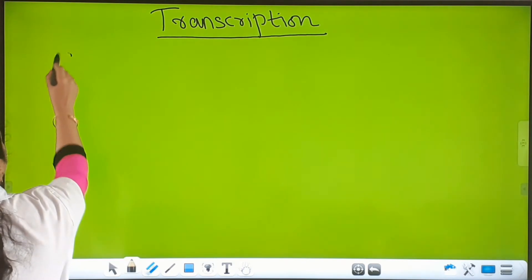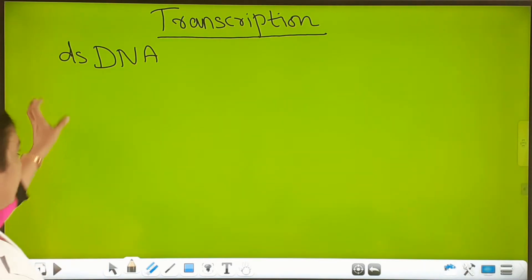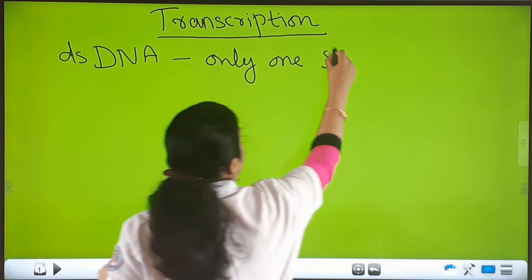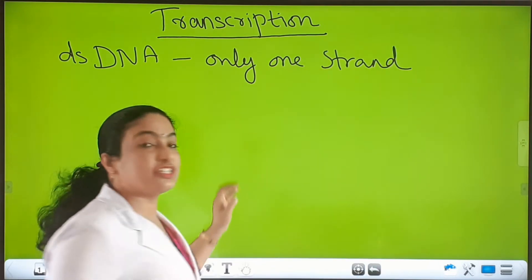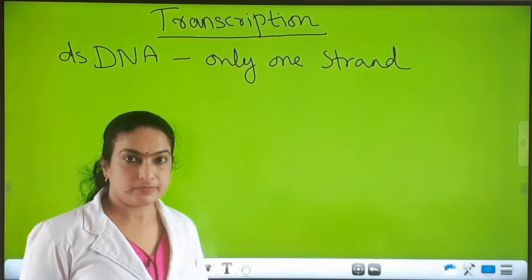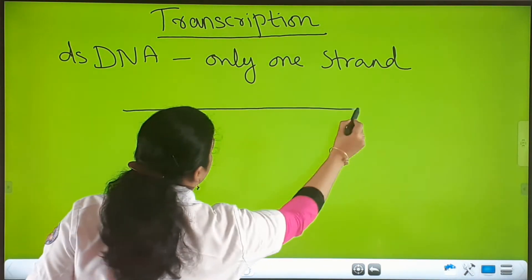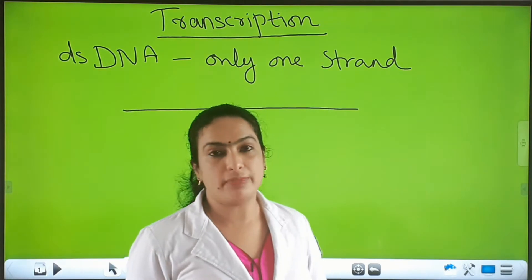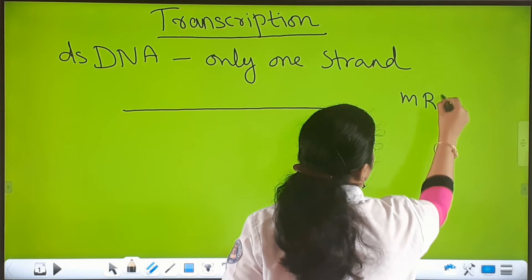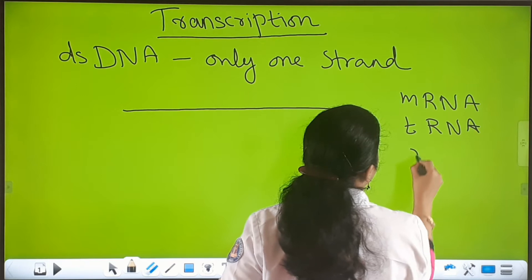In double-stranded DNA, only one strand acts as the template strand for the formation of mRNA. From a segment of DNA, three types of RNA are formed: mRNA, tRNA, and rRNA.